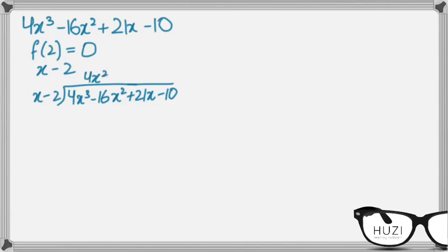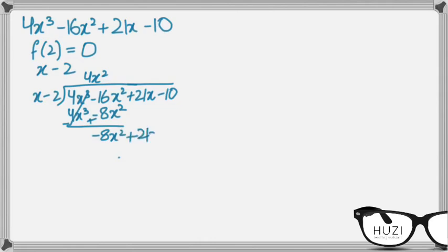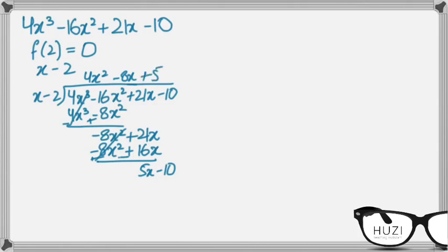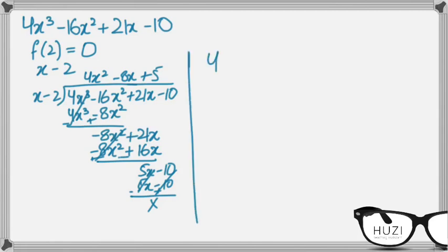The first term gives 4x squared. So 4x cubed minus 8x squared, change of signs, gives minus 8x squared plus 21x. Then minus 8x squared plus 16x, change of signs, gives 5x minus 10. Finally 5x minus 10, change of signs, both cancel out. So the quadratic factor is 4x squared minus 8x plus 5.